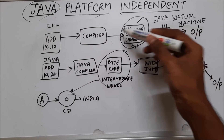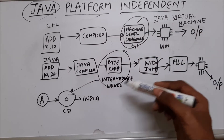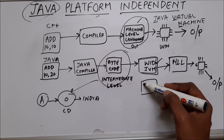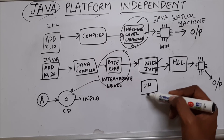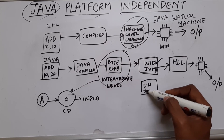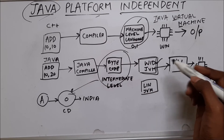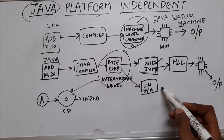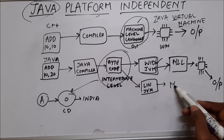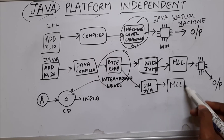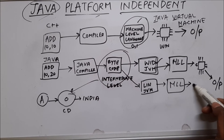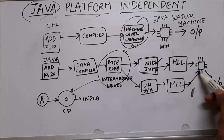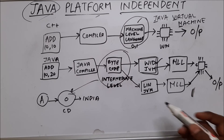Similarly, if this CD is put inside a Linux machine, we install JVM for Linux. This JVM takes the bytecode, converts it into machine level language, and our processor is able to understand it and give us an output.